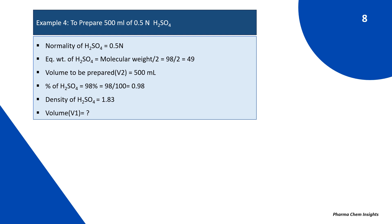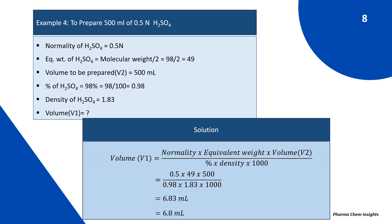Applying the formula: V1 = normality × equivalent weight × V2 ÷ (percentage × density × 1000). That is 0.5 × 49 × 500 ÷ (0.98 × 1.83 × 1000). By calculating we get 6.83 ml, approximately 6.8 ml. So 6.8 ml of H₂SO₄ is required to be diluted to 500 ml with water to get 0.5 normal H₂SO₄ solution.